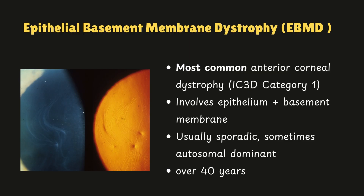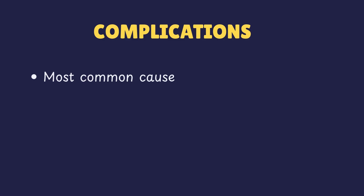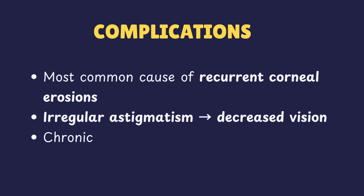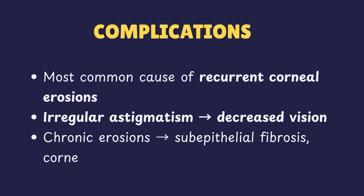EBMD is typically considered a condition of middle age. The hallmark complication is recurrent corneal erosion. Chronic and repeated erosion leads to sub-epithelial fibrosis and scarring. Because of scarring and abnormal epithelium, patients can have an irregular surface leading to irregular astigmatism, and there may also be progressive vision loss from scarring and corneal haze.